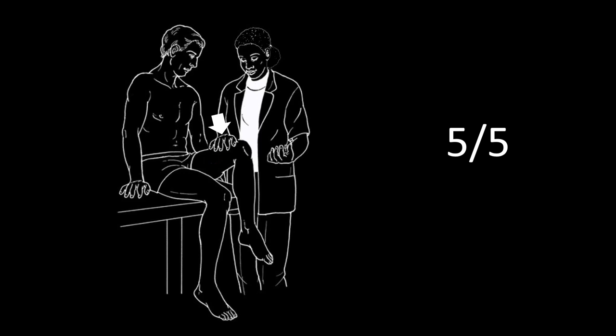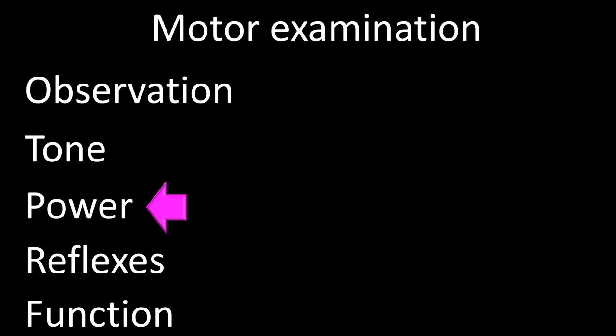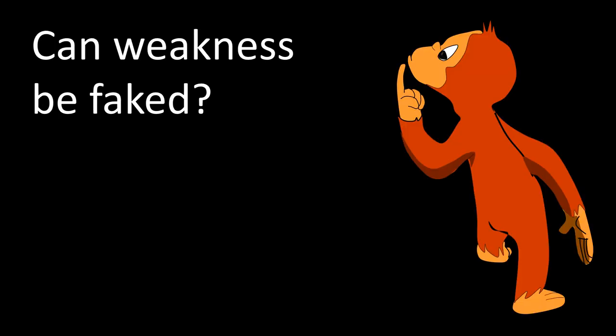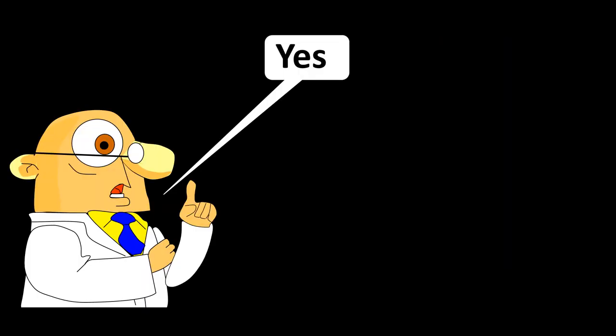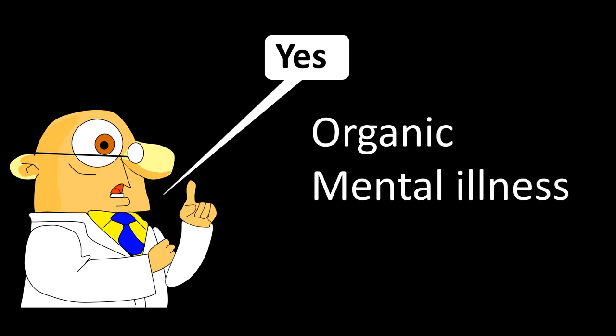This process is done for the different muscle groups in the lower and upper extremities. Before leaving the subject of power grading, we must answer: can weakness be faked? The short answer is yes. Generalized and local weakness can have an organic basis, be the manifestation of mental illness, or be faked for conscious secondary gain. Non-organic weakness often manifests as inability to move a leg or arm.